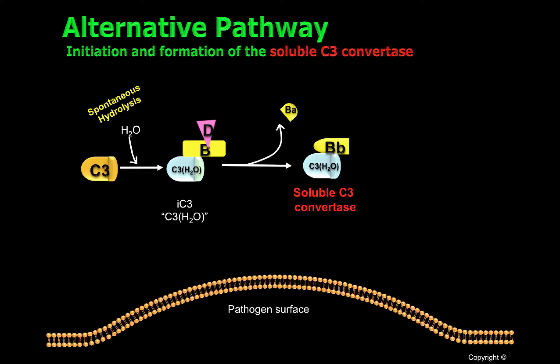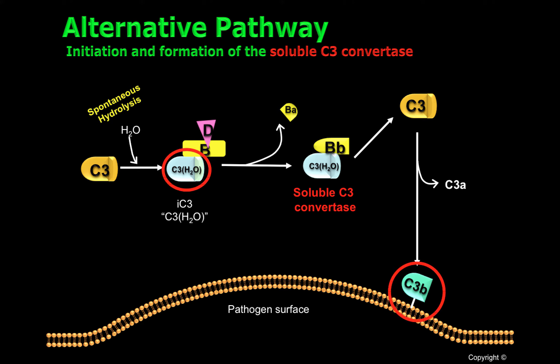This C3 convertase can cleave C3, generating C3A, a potent inflammatory molecule, and C3B. If C3B is close enough to the surface of a pathogen, it will covalently attach to its surface. Of note is that C3 water and C3B are very similar in conformation. In fact, C3 water has also been named as a C3B-like molecule.